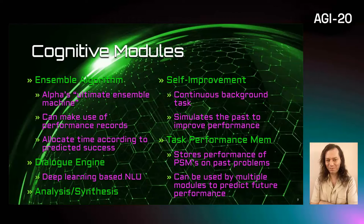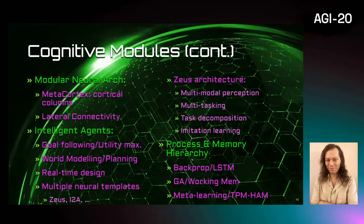Self-improvement is similar to the one in Alpha, like Schmidt-Huber's Gödel machine architectures. It runs continuously in the background and uses system history to improve future performance. Task performance memory uses the AI kernel's transfer learning facility to store past performance of PSMs on tasks and can be reused by multiple modules.